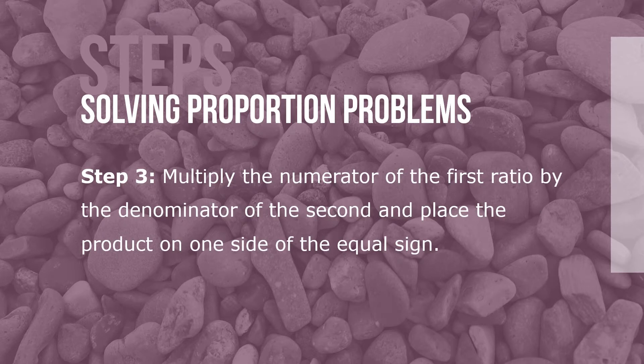Step 3: Multiply the numerator of the first ratio by the denominator of the second and place the product on one side of the equal sign.